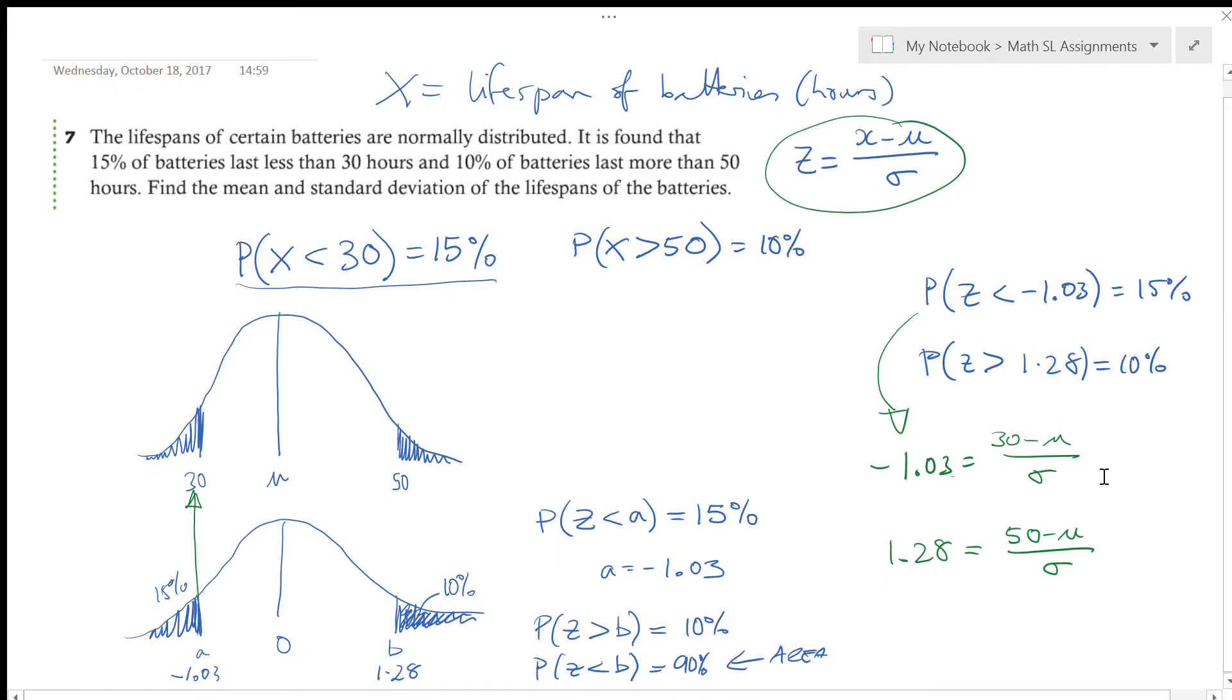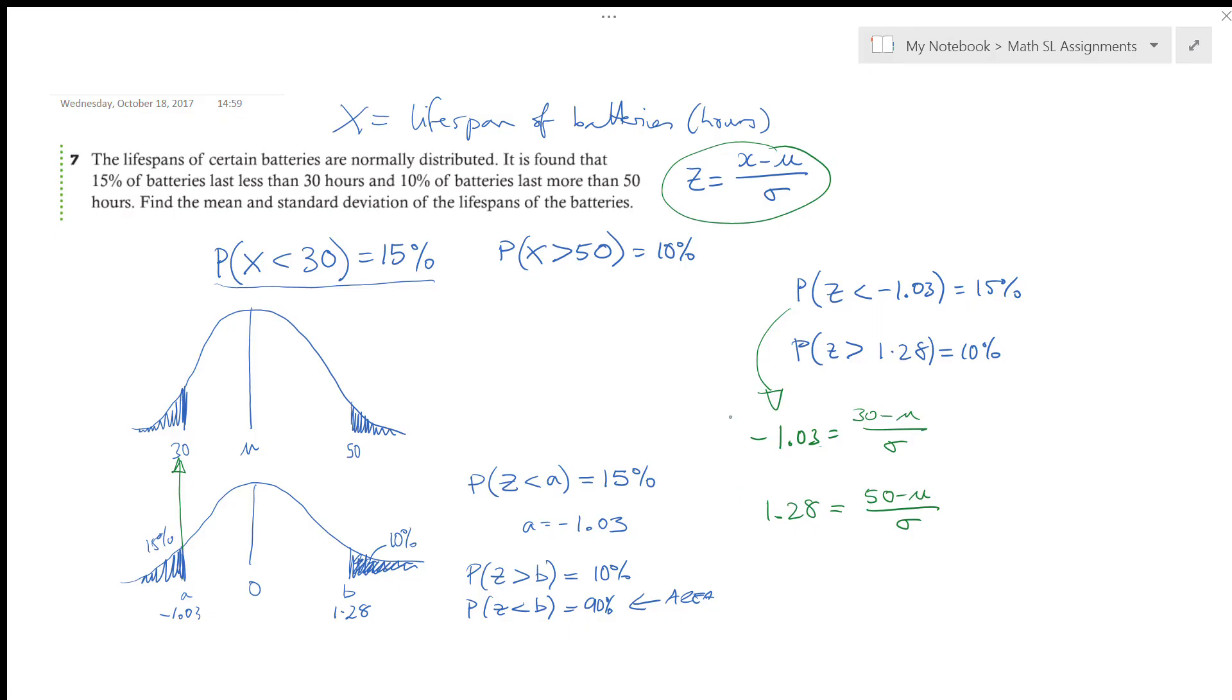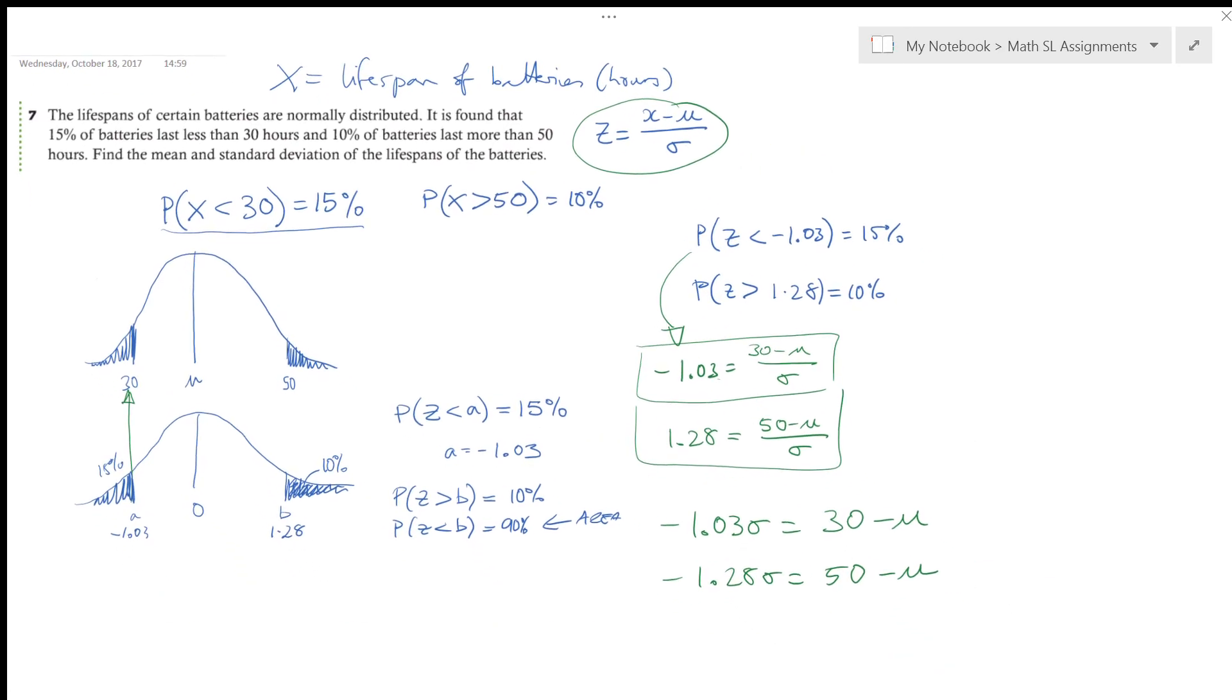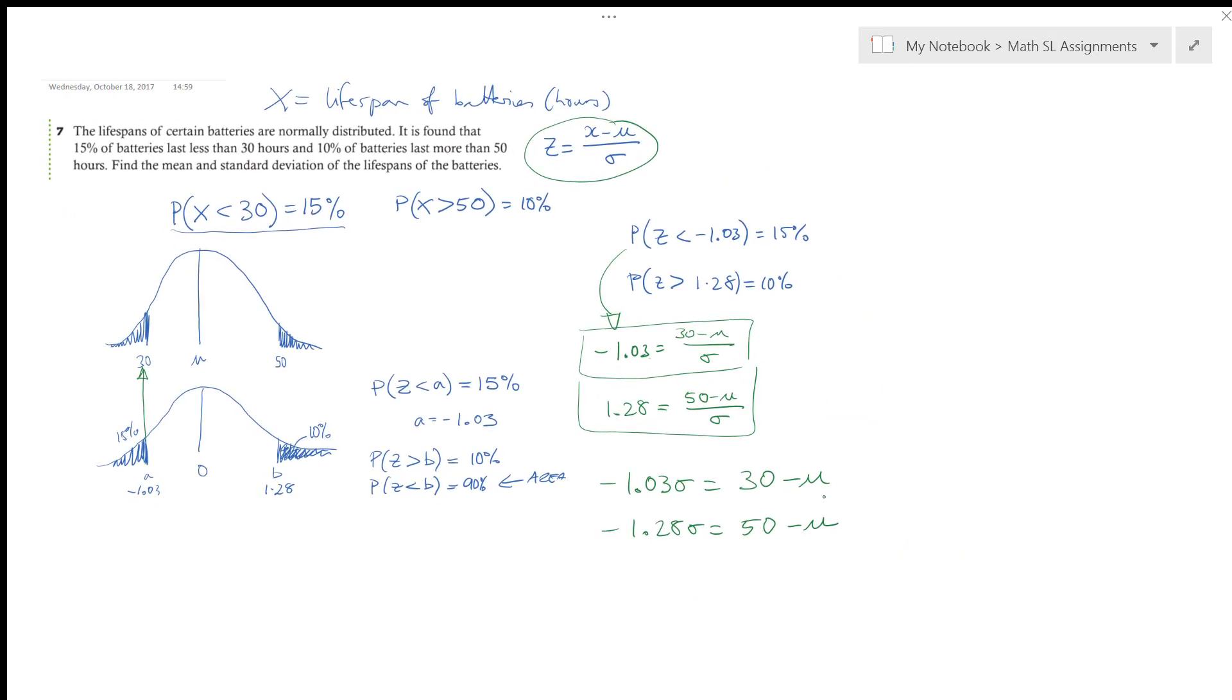So notice what we have here. We've got two equations with two unknowns. So there's a few different ways that we can solve these. Let's get myself more space. So here's one equation, and here's my other equation. I might just rewrite them a little bit. How about I write it like negative 1.03 multiplied by the standard deviation is equal to 30 minus the mean. And 1.28 multiplied by the standard deviation is equal to 50 minus the mean. Alright, so some substitution, or you could use polysmelt on your calculator, a bunch of different ways here. What if I just subtract these from each other?